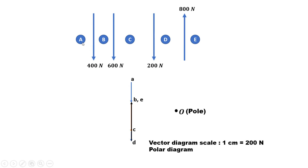So A to B represents 400N, that is 2cm. B to C represents the 600N force, that is 3cm by scale. C to D is the 200N force, that is 1cm. And D to E is the 800N force acting in the upward direction. So we have gone from A to B, then B to C, C to D, and again in the upward direction from D to E. Our starting point is A and the ending point is E, which coincides with point B. So A to E is the resultant, acting in the downward direction.